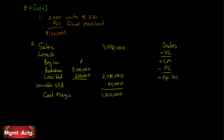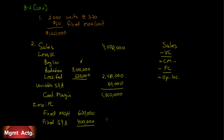We now subtract fixed costs: fixed manufacturing overhead of 600,000 and fixed selling and administrative of 400,000, totaling 1,000,000 in fixed costs. That gives us an operating income of 360,000 under variable costing.